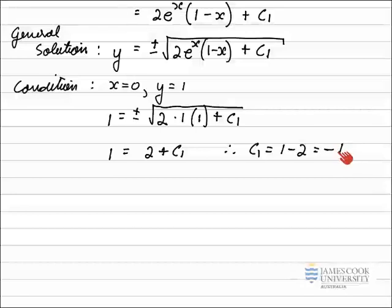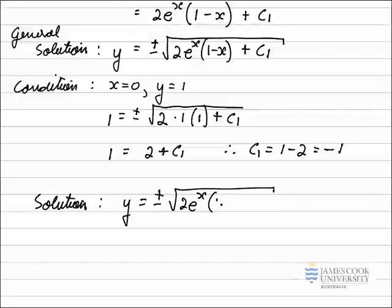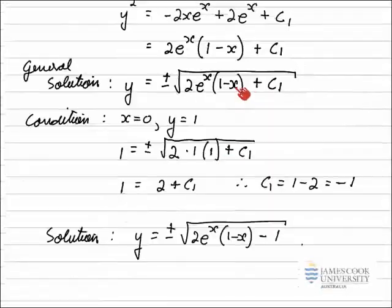So the last move is to substitute minus 1 into the general solution for c1 to get a more exact solution. And writing that out, we see that now the solution to the differential equation with this condition is that y is equal to plus or minus the square root of 2e to the x times 1 minus x plus the arbitrary constant, which is minus 1. That is the solution to the first order differential equation using the separation of variables.